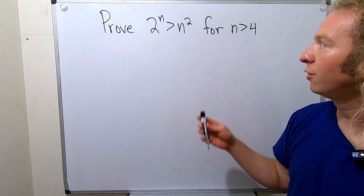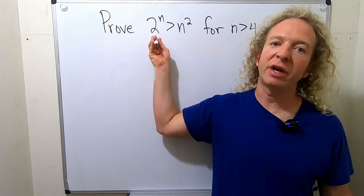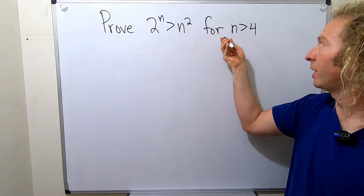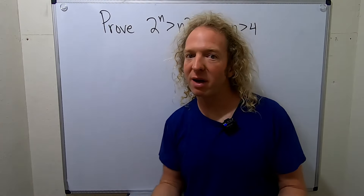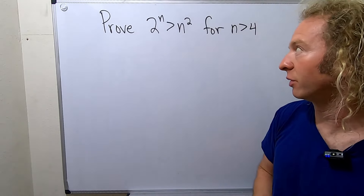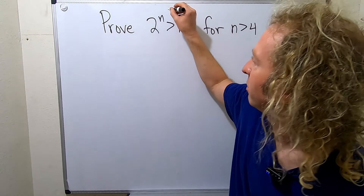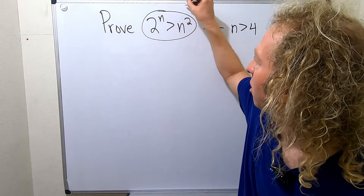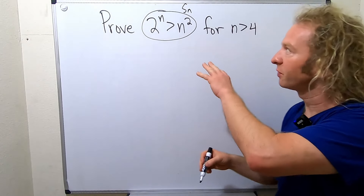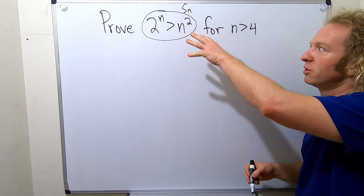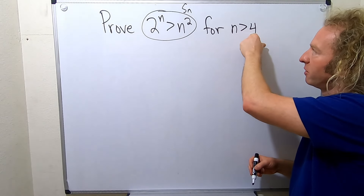In this video we're going to prove that 2 to the n is bigger than n squared for n bigger than 4, and we're going to do it with mathematical induction. We can think of this as our statement — I'll call it S sub n, or you can call it P sub n. Induction shows that a statement is true for all n, in this case all n bigger than 4.